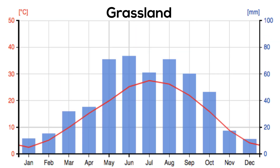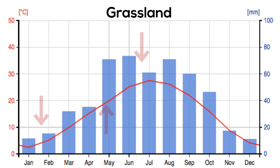Next is a grassland of North America. First, there is little rain in the winter, and then a fair amount in the summer. From the shape of the temperature graph, you can see that they have four seasons — they have cold winters and hot summers.